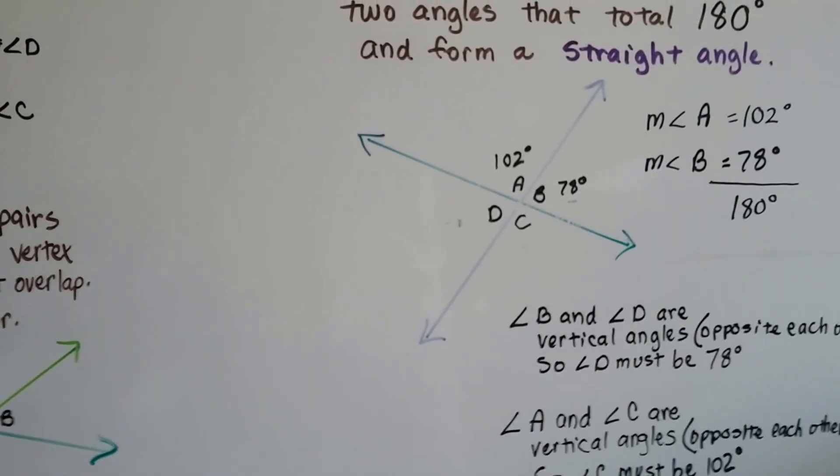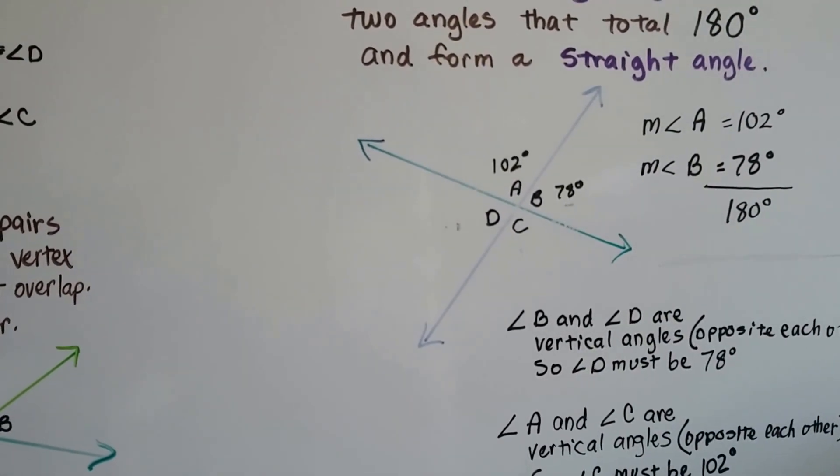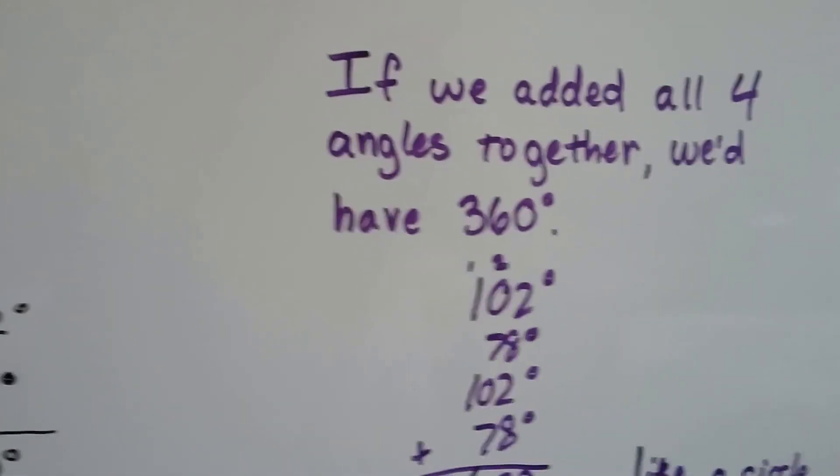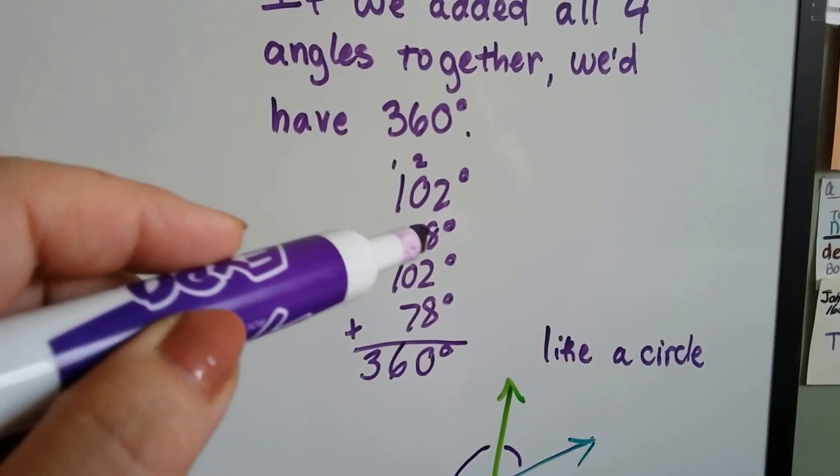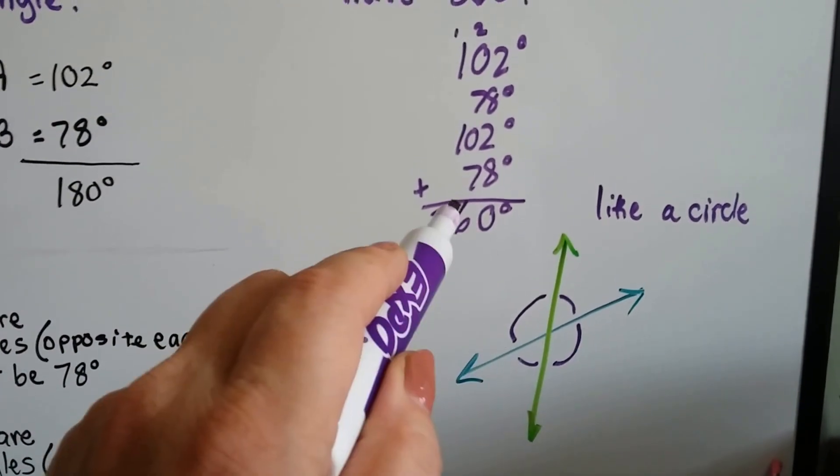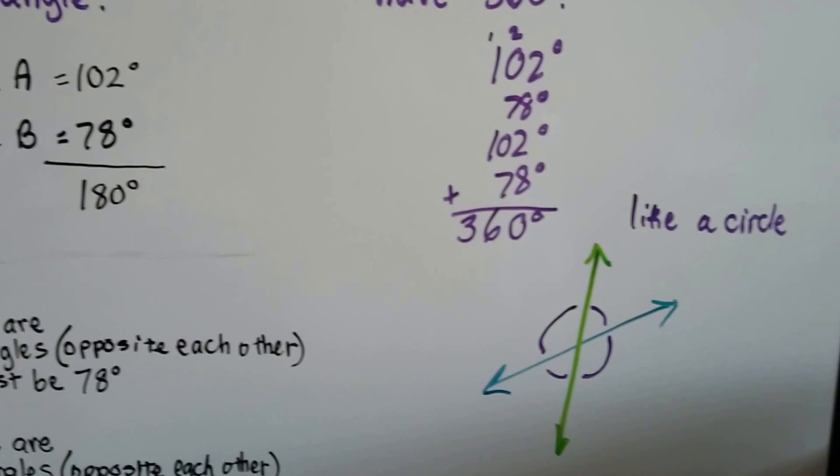And all you have to do is figure out what the measures are, and if we added all four angles together, we'd have 360 degrees. If we added the 102 and 78 and 102 and 78 from these, it would create a little circle, and it would be 360 degrees, like a circle is 360 degrees.